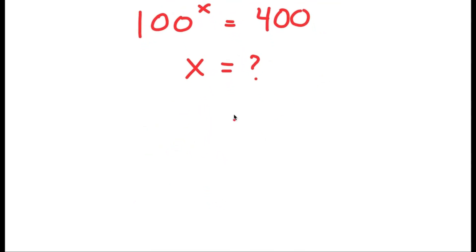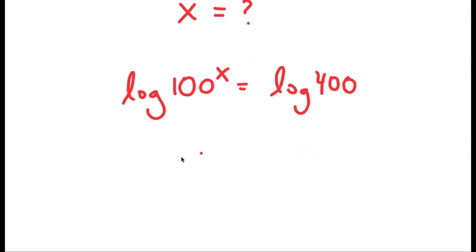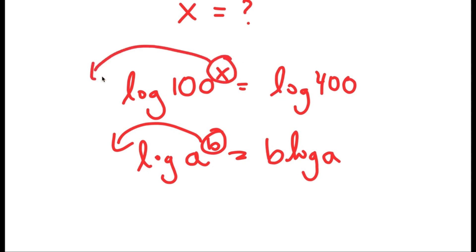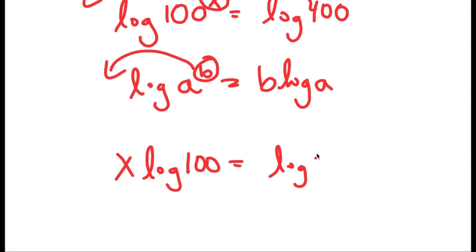To solve this, I'm going to be using logarithms. I'm going to first start by taking the log on both sides. So I get log of 100 to the power of x is equal to log 400. If I have something in the form log a to the power of b, I move this x to the front, so I get b times log a. In this case I can move x to the front, so I get x times log 100 is equal to log 400.